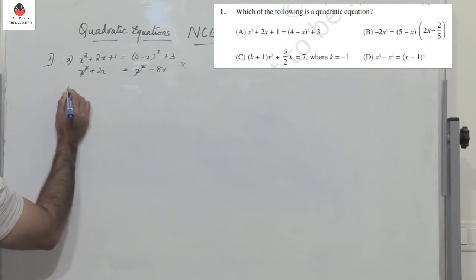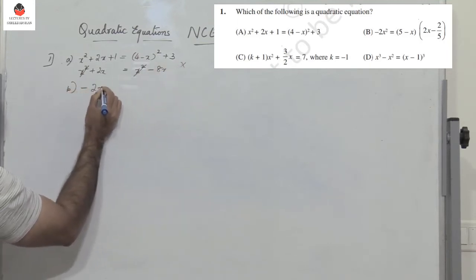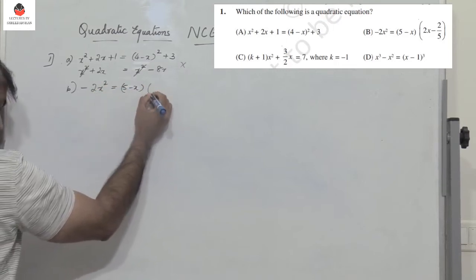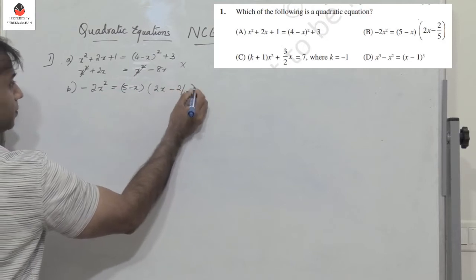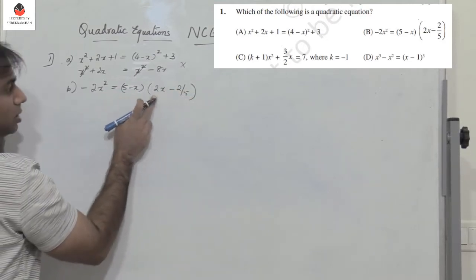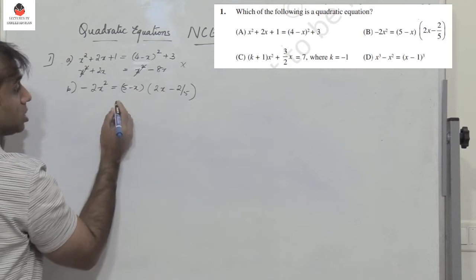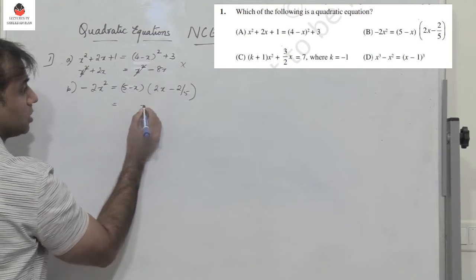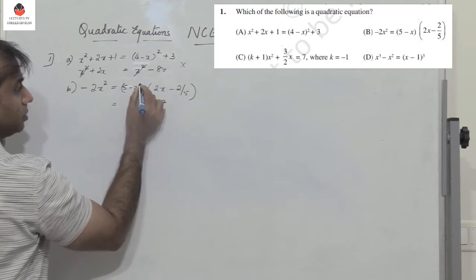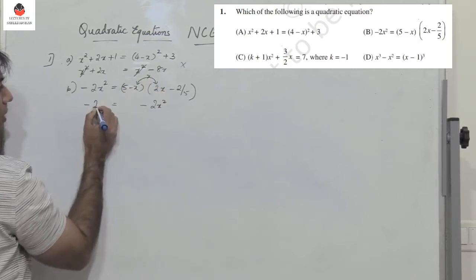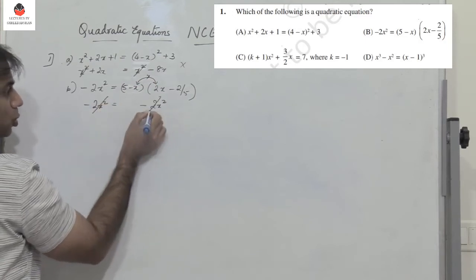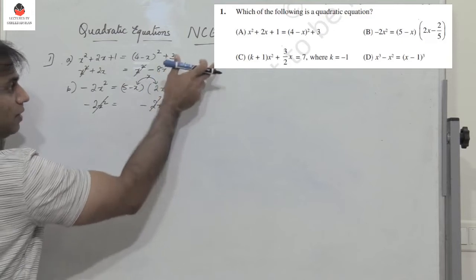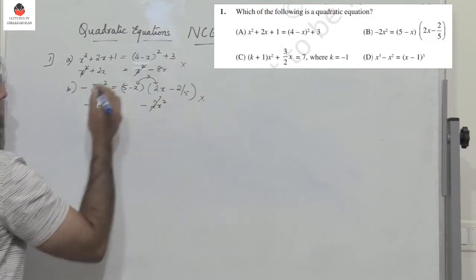Second, option B: minus 2x squared equals 5 minus x into 2x minus 2 by 5. Just multiply to get the x squared term: minus x into 2x gives minus 2x squared. Here you also have minus 2x squared — these two cancel. So this equation, if simplified, will not have the x squared term. This is not a quadratic equation.